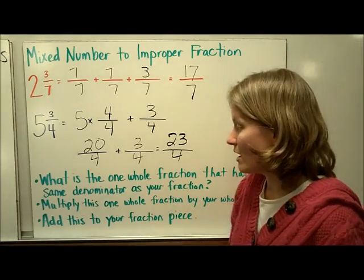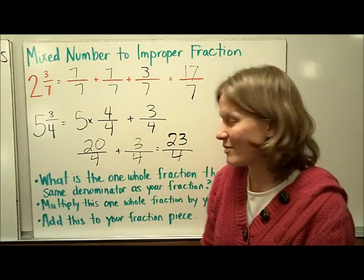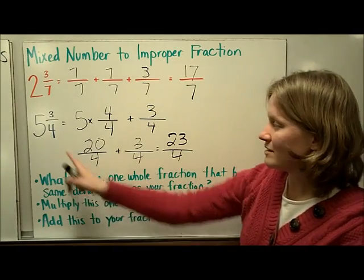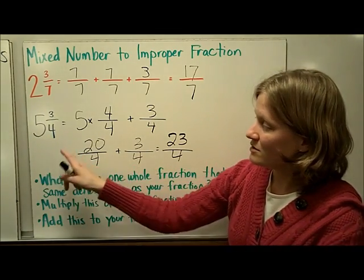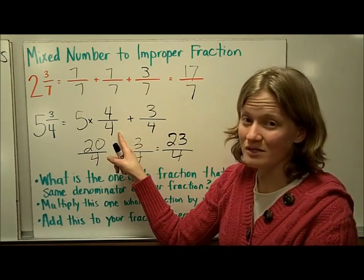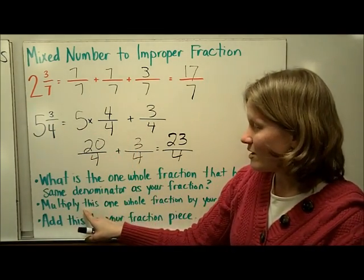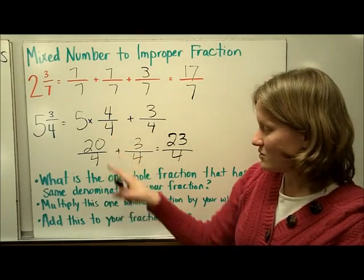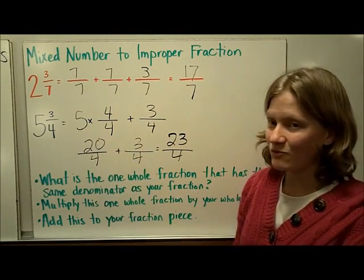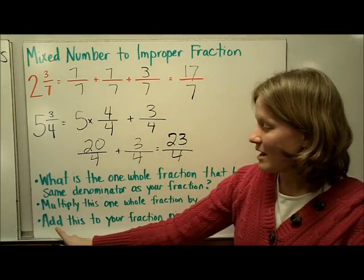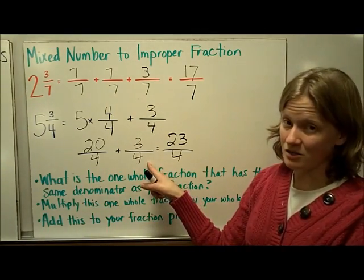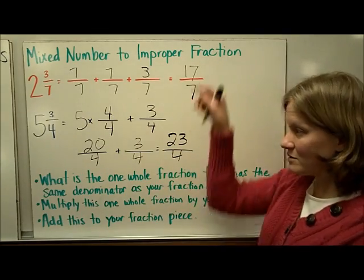The steps I followed: first ask yourself what's the one-whole fraction that has the same denominator as the fraction you're starting with. Here I was starting with fourths, so the one-whole fraction is 4 fourths. Then multiply this one-whole fraction by the whole number — I did 5 times 4 fourths. Then add that answer to the fraction piece you already started with, giving 23 fourths.